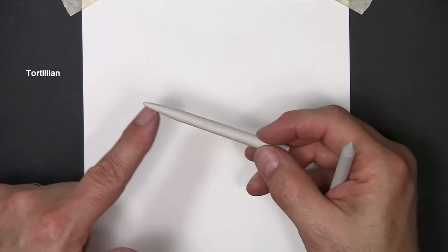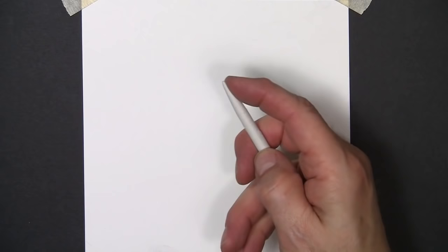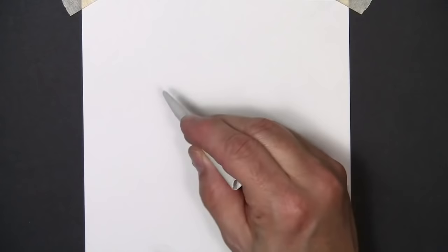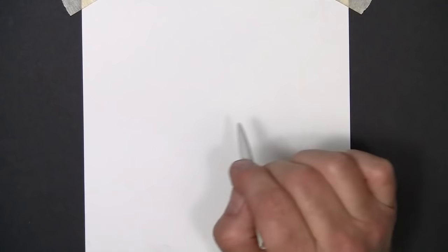First of all, you have to be pretty careful with these blending tools because they can damage the paper, especially the tortillion. It has a fairly hard tip on it. If you're not careful when you're blending, you can damage the tooth of the paper, and once that's compromised, it can't really be fixed. You can sometimes never be able to get back to a very nice smooth texture once you've damaged the paper.